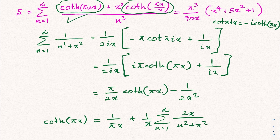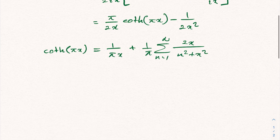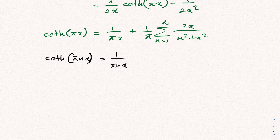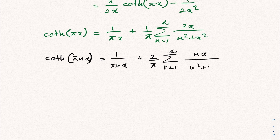Here we have hyperbolic cotangent of pi nx and hyperbolic cotangent of pi n over x. Similarly, we can write hyperbolic cotangent of pi nx: instead of x we plug in nx, so we have 1 over pi nx, plus 2 over pi times sum — now I'm going to change the index to k — from k equals 1 to infinity of nx over k squared plus n squared x squared.